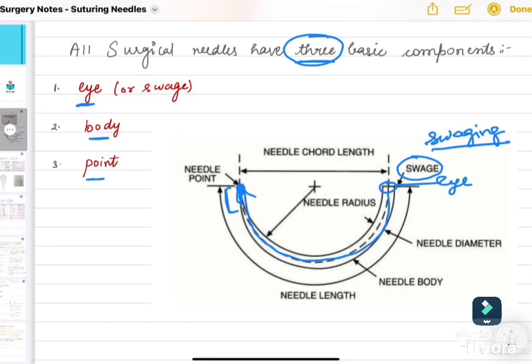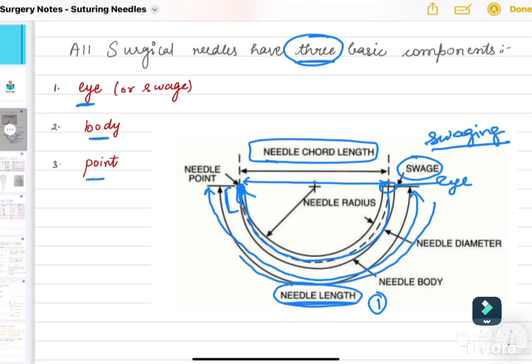There are further more parts of the needle. You can see here in the diagram: needle length, which is the circumferential length from the eye to the point. Another thing is the linear length from eye to needle point, called needle cord length. From the center, this is needle radius. These are the basic components of any needle which you need to understand before we further proceed.